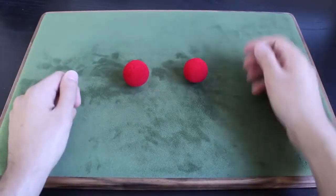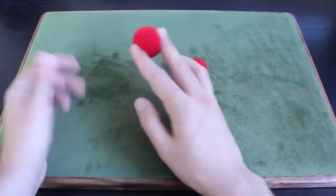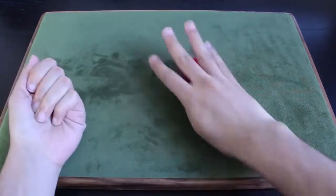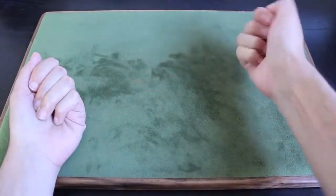So I have two sponge balls and I would have a spectator over here. Take the first ball, place it in my hand. Second ball, I would place it in their hand, we'll just use my hand in this case.